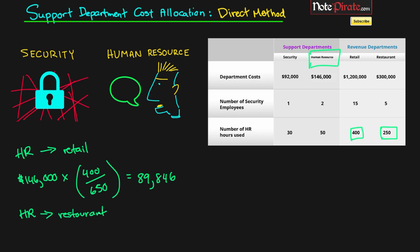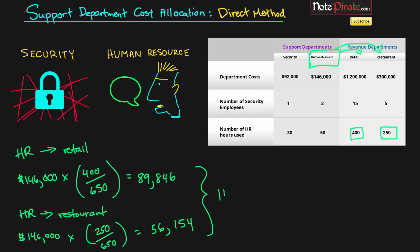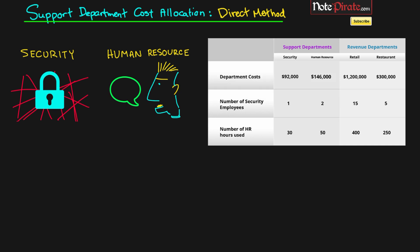Next is HR to the Restaurant department. The Restaurant uses 250 hours of the 650, giving them $56,154 of cost allocated from HR to Restaurant. We've now allocated to both revenue producing departments and can confirm this by making sure the amounts add up to $146,000. Pretty simple — the other methods are a little more complicated.